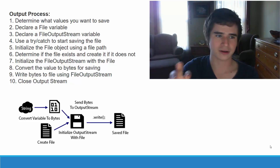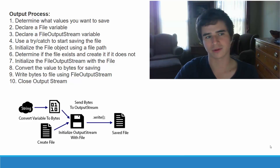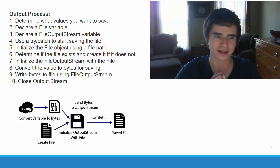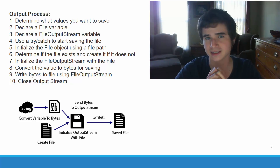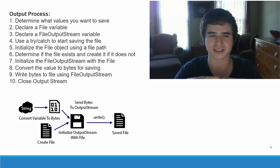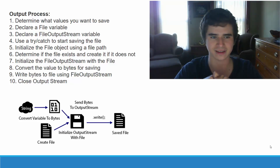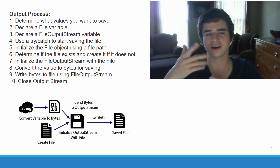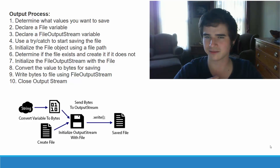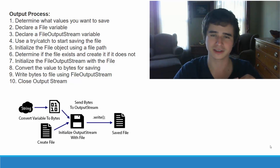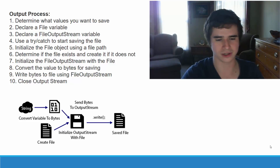We will use the try block for saving the file. We will initialize the object using the file path. The file object will determine if the file exists and create a new file if it does not exist yet. Then we initialize that file output stream with the file object, telling it we're going to save to this location. We convert the value into bytes for saving — converting a string of text into bytes — then write those bytes to the file using the file output stream, and finally close that output stream.